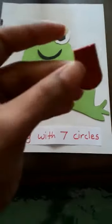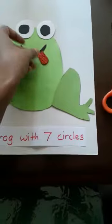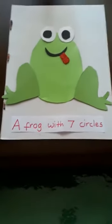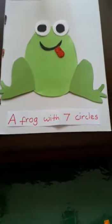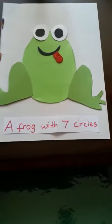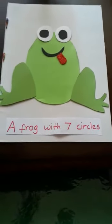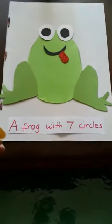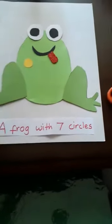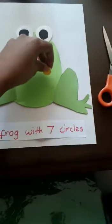Then stick the tongue right under the mouth like this. Have your child stick the seven circles and have them count while sticking. So we have one, two...